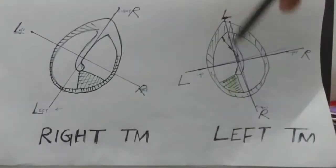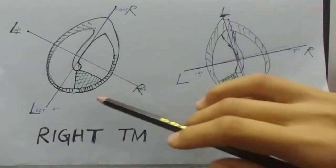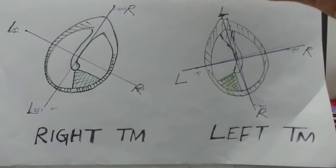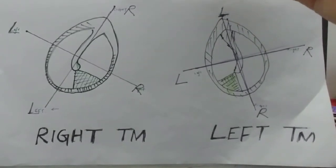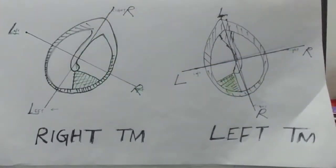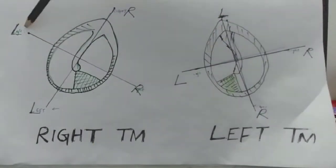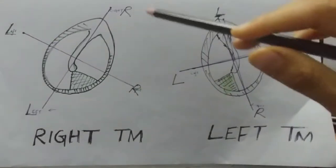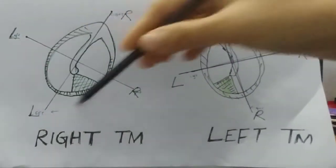For the right tympanic membrane, the vertical line is from right to left, up to down. And the horizontal line is from down to up, right to left.